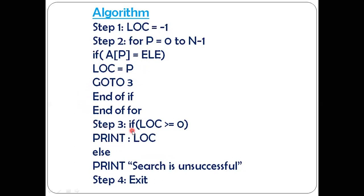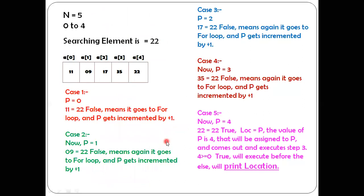We go directly to step three: if location is greater than or equal to zero. The value of location is 4. Is 4 greater than or equal to zero? Yes, condition true. We execute the print statement before the else: print loc, which is 4. That means the searching element 22 is present at position 4. Then step four: exit.